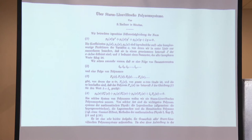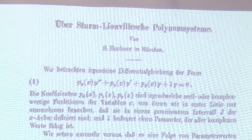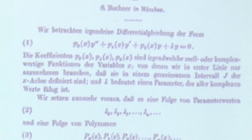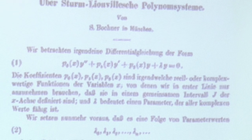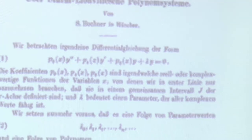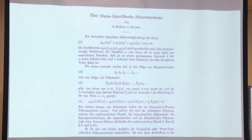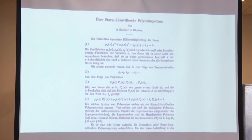His initial problem was to find polynomial coefficients P0, P1, P2 such that this eigenvalue problem has an infinite sequence of eigenvalues corresponding to an infinite sequence of polynomial eigenfunctions, such that the nth polynomial has degree n. He didn't talk about any orthogonality. Maybe he kept it in mind, but he never wrote such a thing in this paper. He claimed that he found all such sequences, however, strangely, in the same paper he missed some sequences satisfying his initial problem.